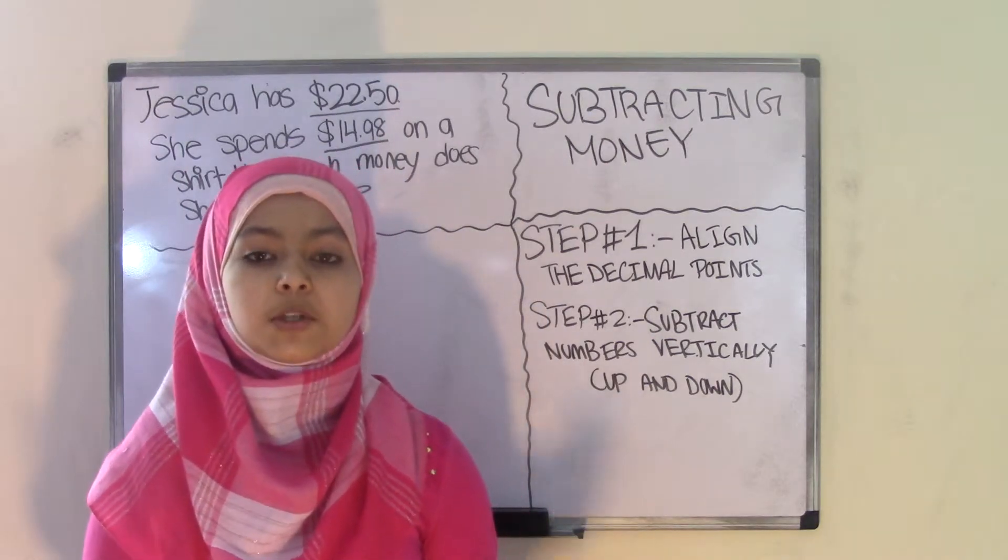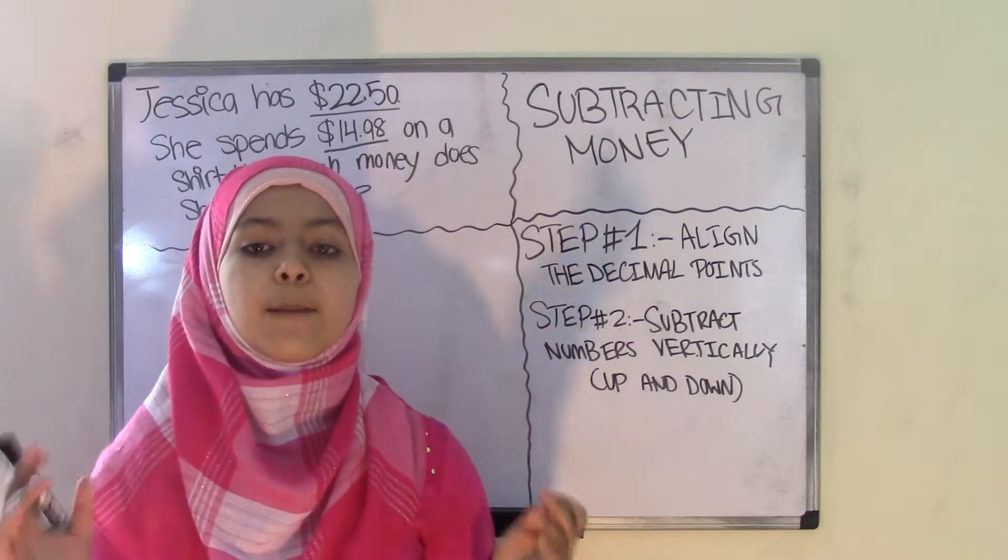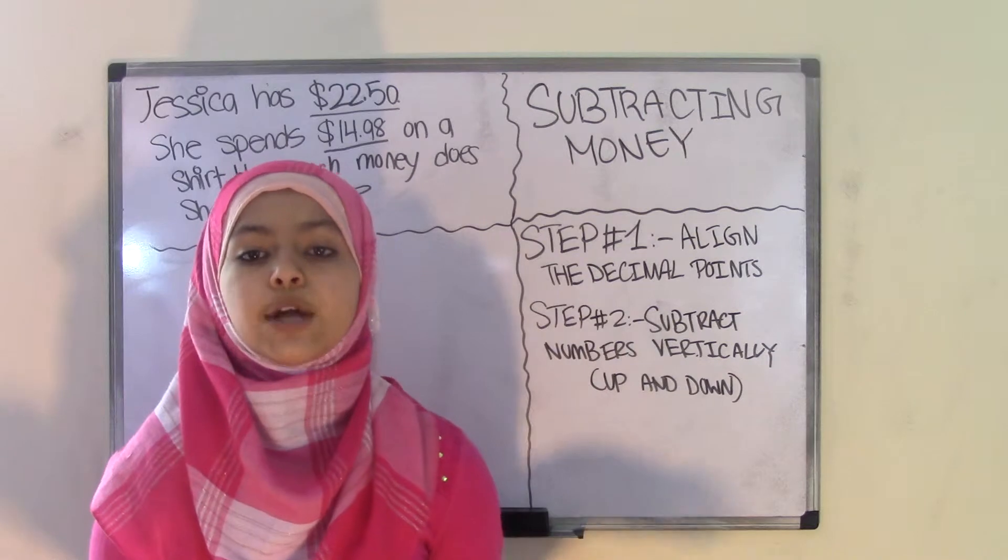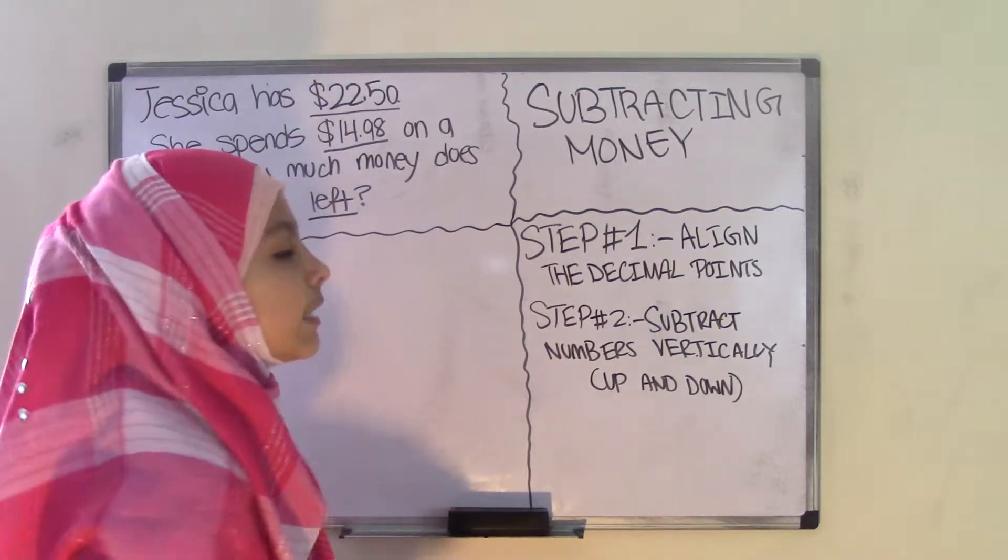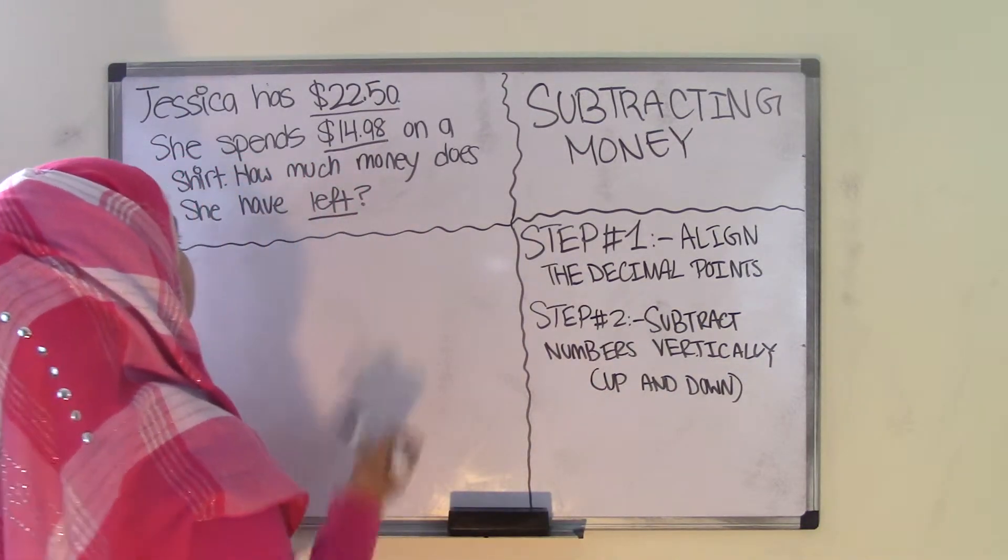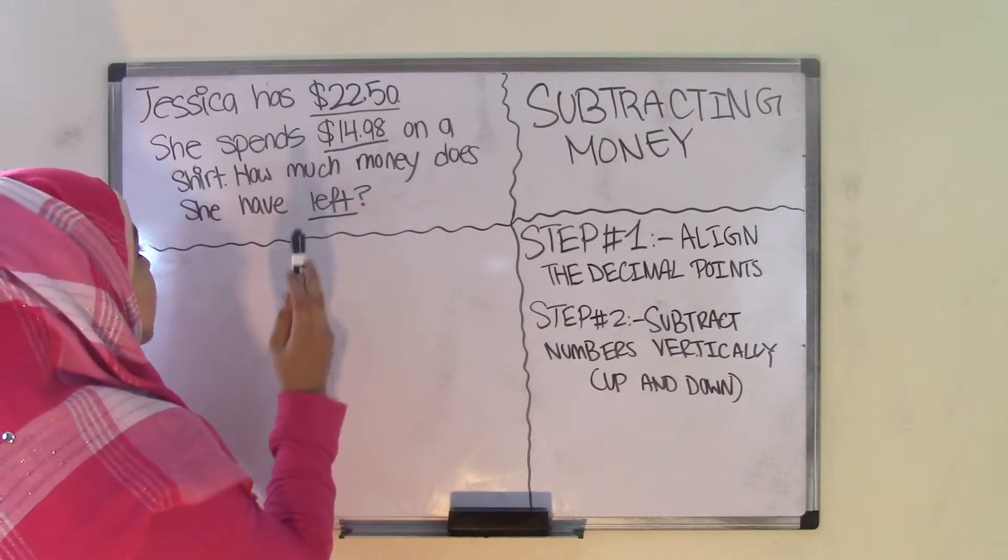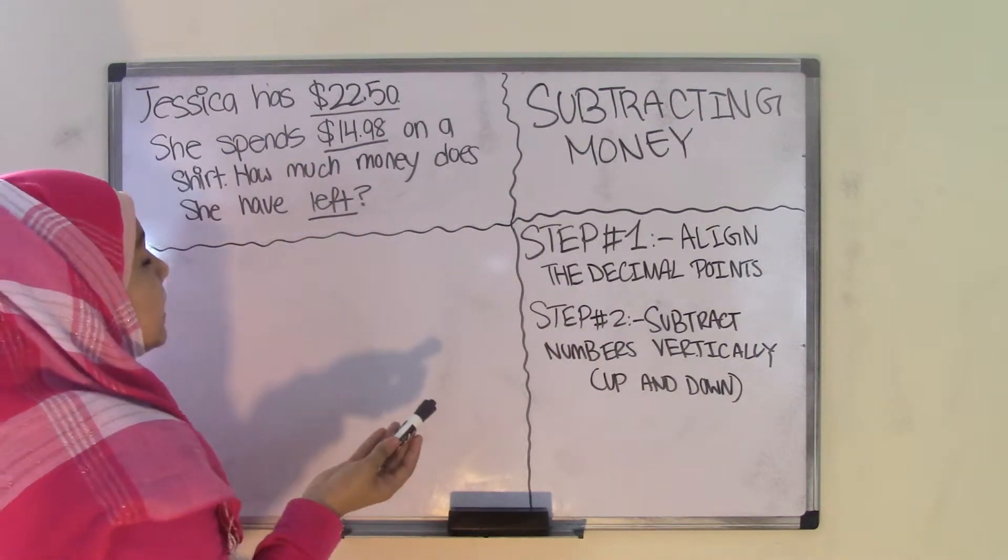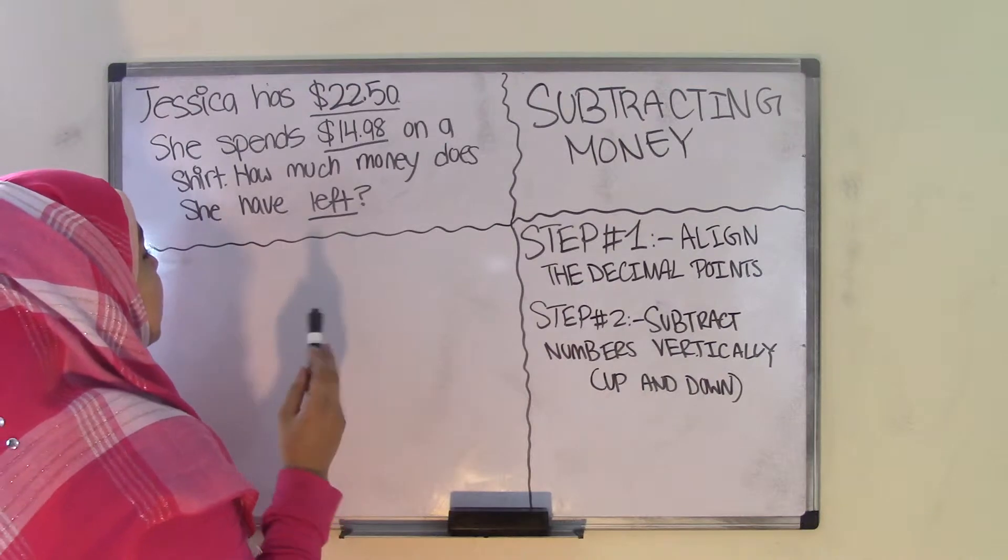Today I'm just going to be using a word problem to show you guys how we can use money in our everyday lives and how we subtract money. As you can see up on the board, I have a word problem that says, Jessica has $22.50, she spends $14.98 on a shirt, how much money does she have left?